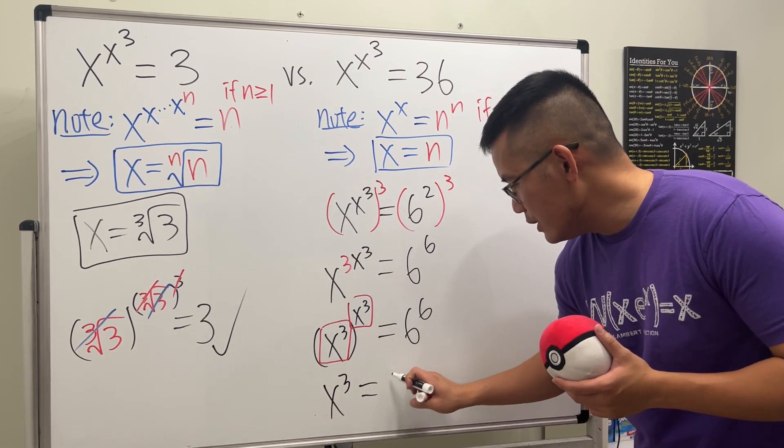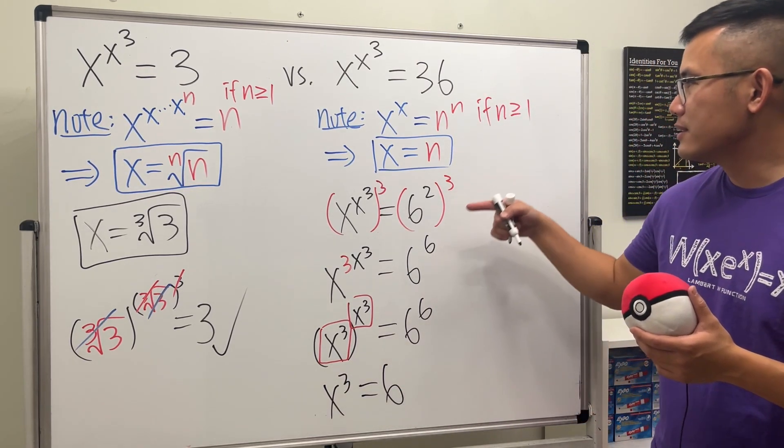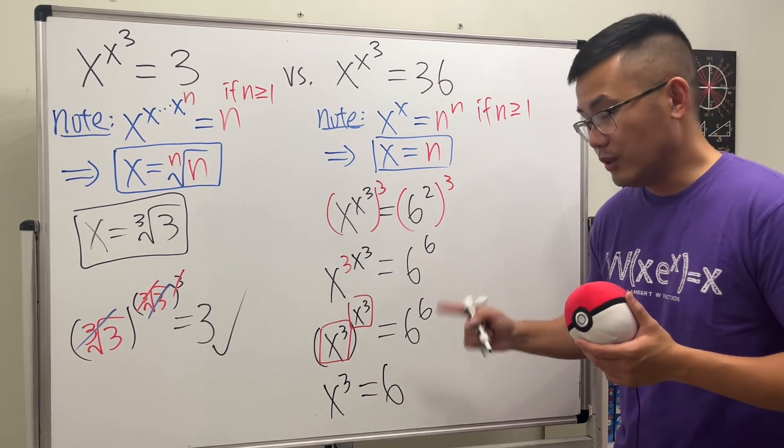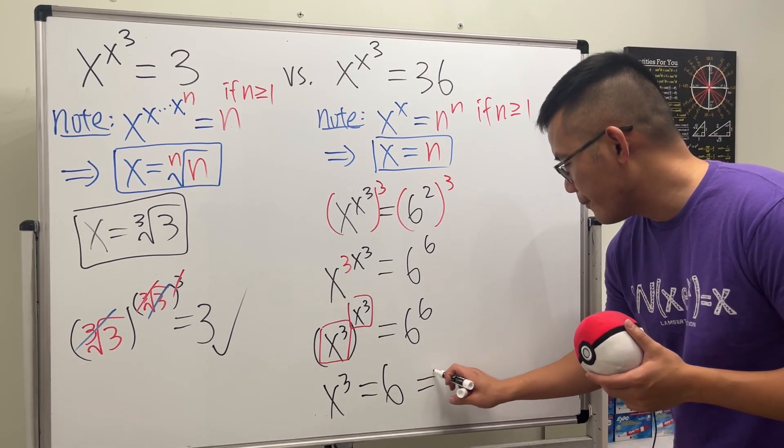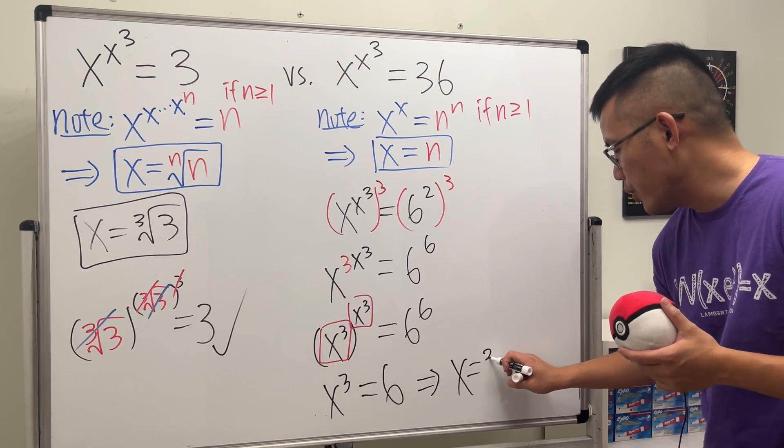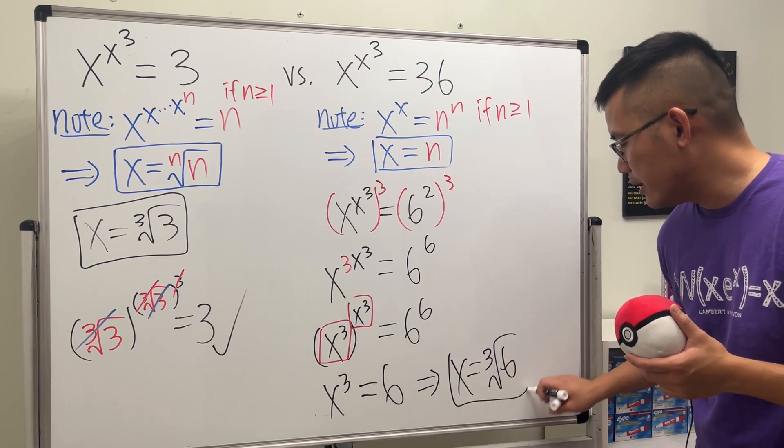x to the third power is equal to 6, and of course 6 is greater than 1, so we only have one answer for this. And of course, this will tell us x is equal to the cube root of 6, and then we are done.